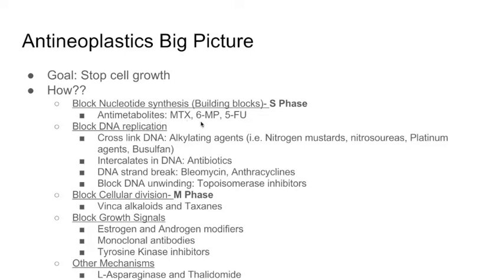Whether it's methotrexate, 6-mercaptopurine, 5-fluorouracil, or the pyrimidine and purine analogs — these go into the cell and mimic the building block, and the DNA polymerase is not going to work. That's the first step.